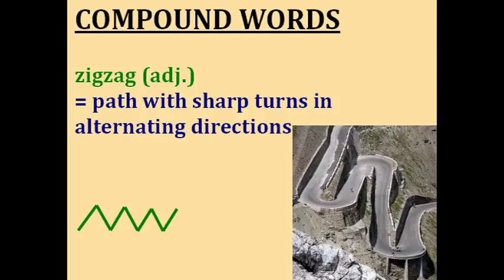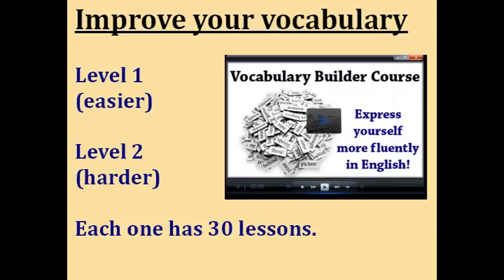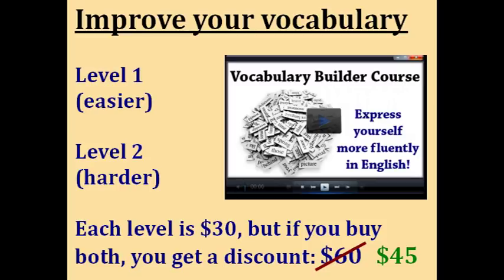So you've just learned some compound words from A to Z. If you'd like to continue improving your vocabulary, you'll really enjoy the Vocabulary Builder courses at Espresso English. There are two levels — level one is easier and level two is harder — and each level has 30 lessons. Level one focuses on essential everyday words for daily life, work, study, travel, and describing people. Level two goes deeper and includes more advanced topics like binomials, metaphors, word roots, and prefixes and suffixes. Each level is $30, but the special offer for today's webinar attendees is both levels together for only $45 instead of $60.